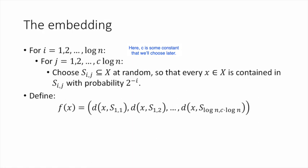independently with probability 2 to the minus i. And then I'm going to define my embedding as follows. The image f(x) of x under this embedding is just going to be this vector. So this is a vector where I've taken the distances between x and S_{i,j} for all of the S_{i,j}'s, and I've just shoved them together in a vector. So here when I say the distance between x and a set, what I mean is that the distance between x and the set S is defined to be equal to the minimum over y in S of the distance between x and y.